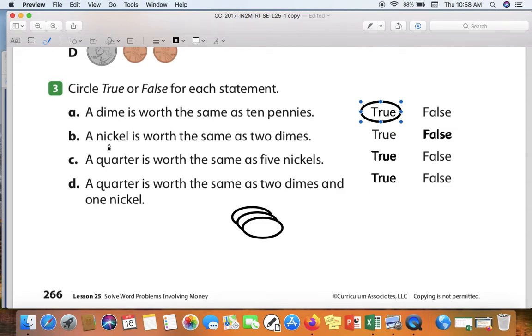A nickel is worth the same as two dimes. Think about two dimes in your head. One dime is ten cents. So two dimes would be ten plus ten makes twenty cents. Is one nickel the same as twenty cents? No, a nickel is only worth five cents.